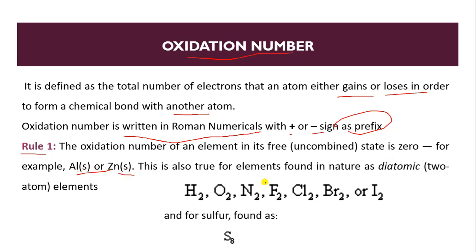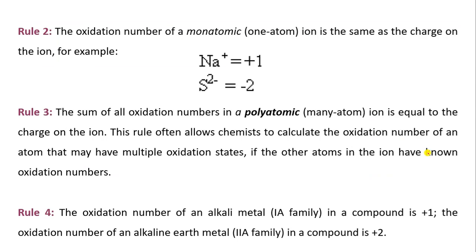This is also true for elements found in nature as diatomic elements. For example, H2, O2, N2, F2, Cl2, Br2, or I2. And for sulfur, it is found as S8. For this type of diatomic molecule as well as for sulfur, the oxidation number is zero.